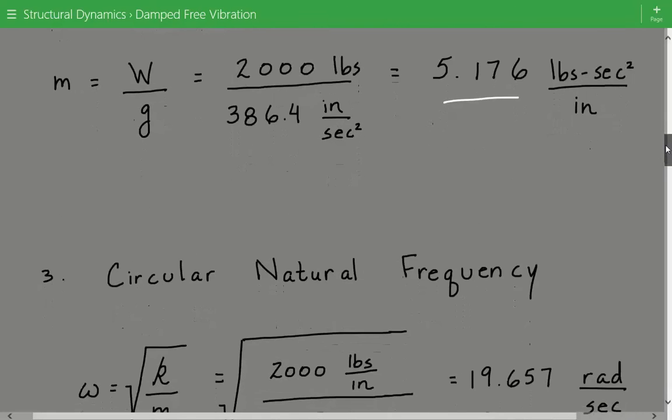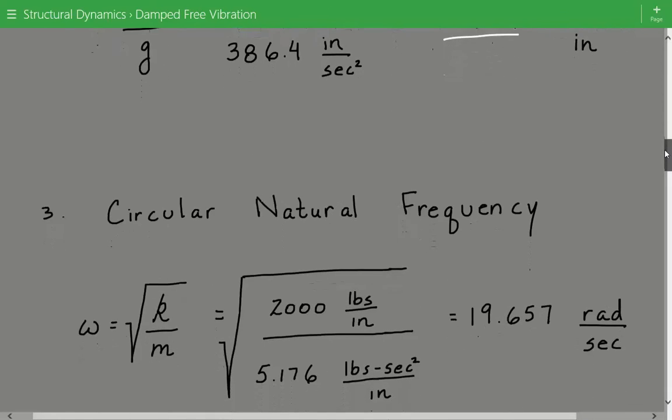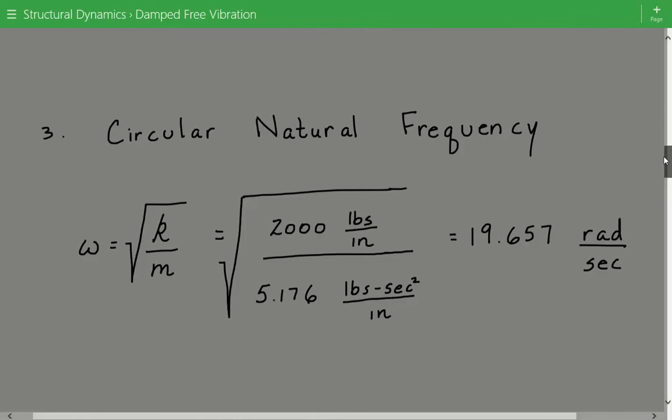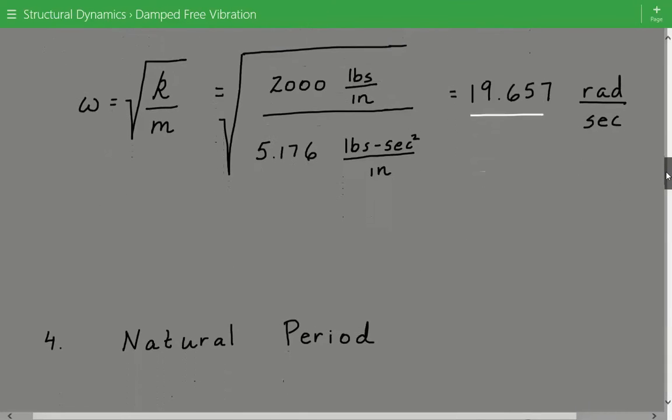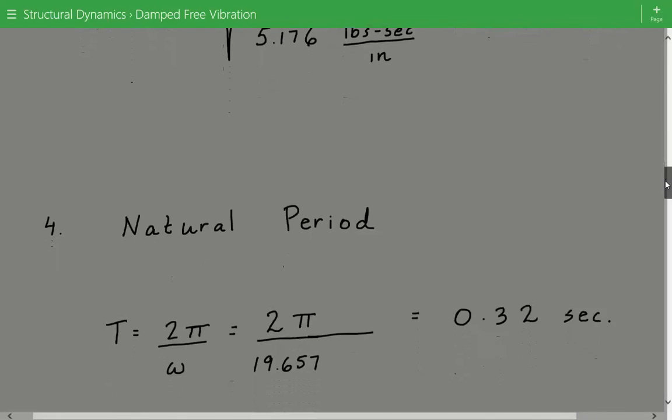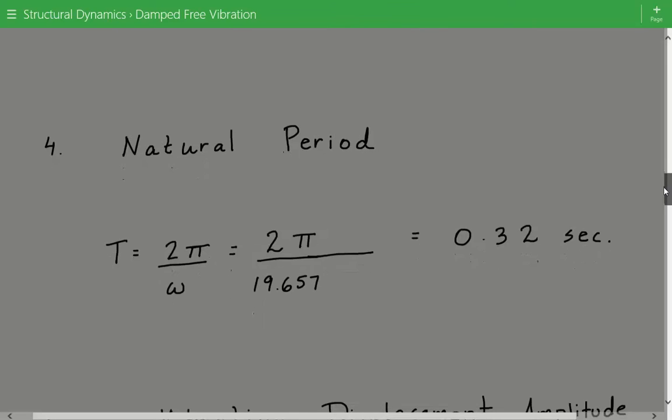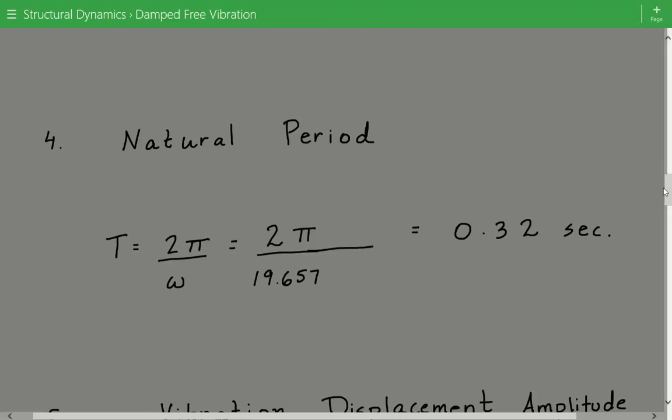After this we can calculate the circular natural frequency and that's equal to the square root of the stiffness divided by the mass. So that comes out to be 19.657 radians per second. Then we can calculate the natural period which is equal to 2 pi divided by the circular natural frequency omega. So it's 2 pi divided by 19.657 radians per second. So our natural period is equal to 0.32 seconds.